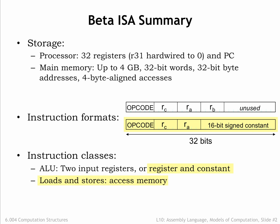The load-store instructions access main memory, either loading a value from main memory into a register or storing a register value to main memory. And finally, there are branches and jumps whose execution may change the program counter and hence the address of the next instruction to be executed.